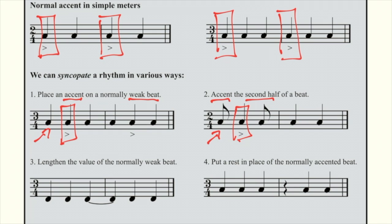The third variation is to lengthen the value of a normal weak beat. Since the last beat is typically the weakest beat in the measure, we're going to lengthen that value and tie it to the first beat of the next measure, which then gives the weaker beat, the second beat, a stronger accent. This is how that sounds.